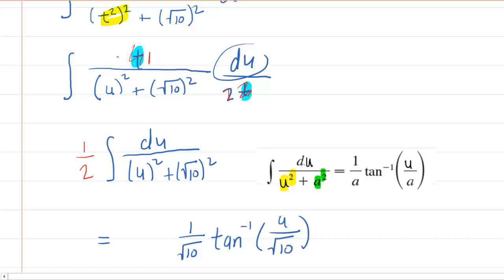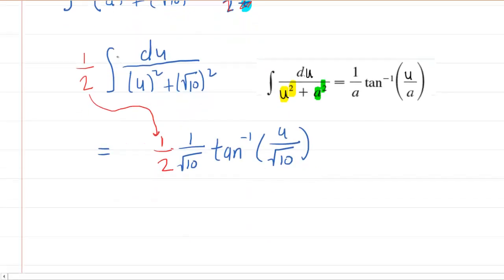Let's not forget that we still had a factor of 1 half in front of our integral. So we're going to have to multiply the 1 half by the 1 over radical 10. To do that, remember you just multiply the numerators. So 1 times 1 is 1. 2 times radical 10 is 2 radical 10.